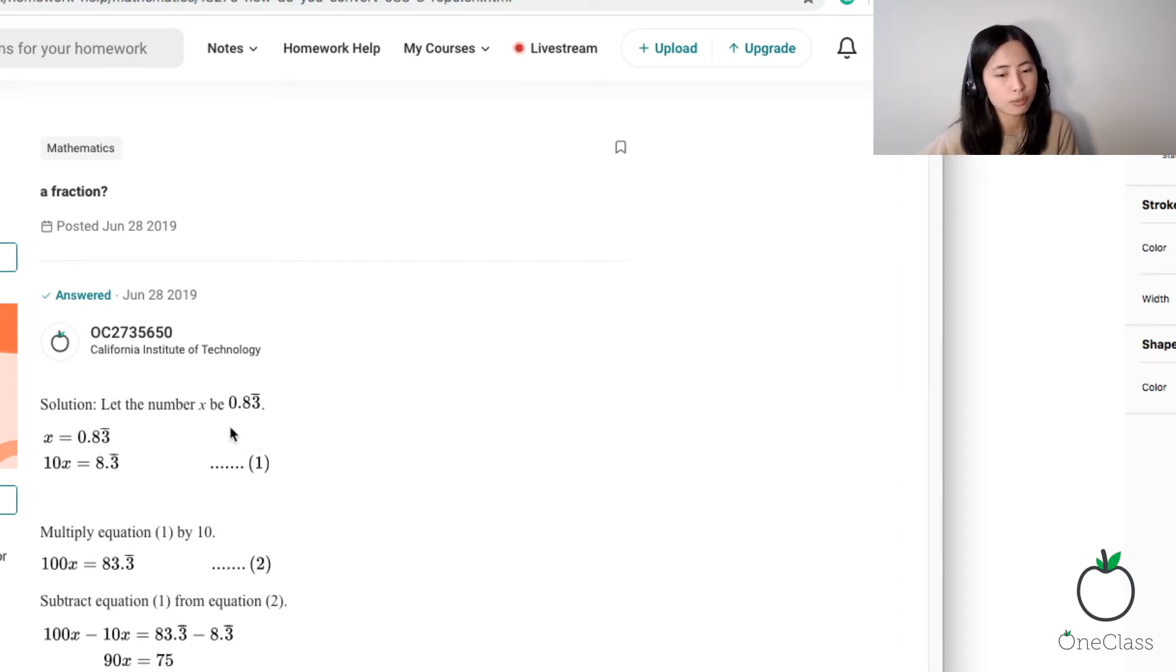So how do you express 0.83 with 3 being repeating as a fraction? That's the question.